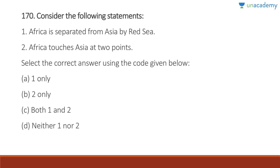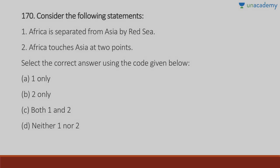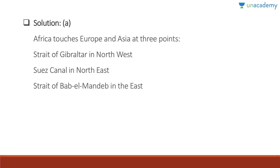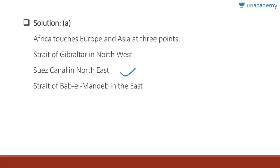Question 170: Africa is separated from Asia by the Red Sea — correct. Africa touches Asia at two points — wrong, it touches at three points. Answer is A, one only. Africa touches Europe and Asia at three points: the Strait of Gibraltar in the northwest, the Suez Canal in the northeast, and the Strait of Bab-el-Mandeb in the east.